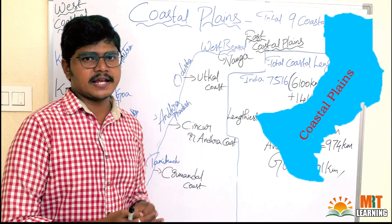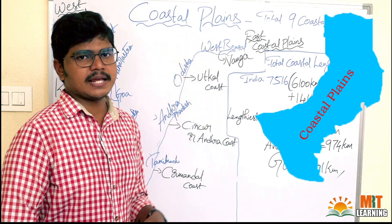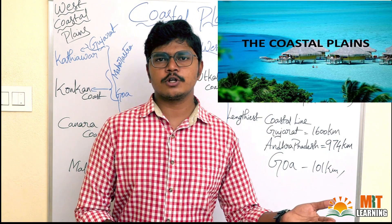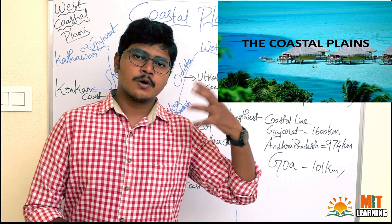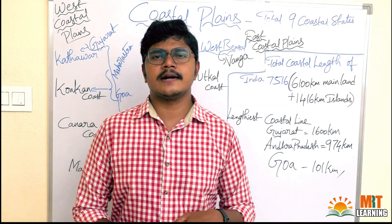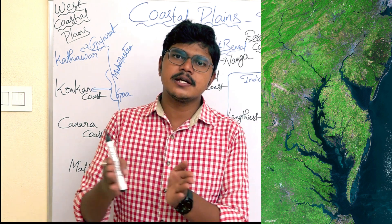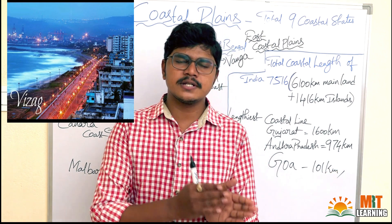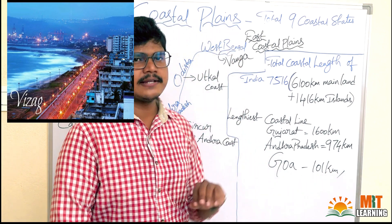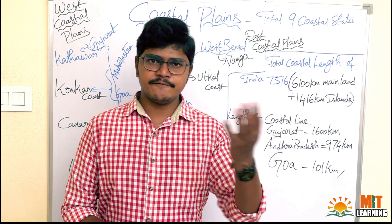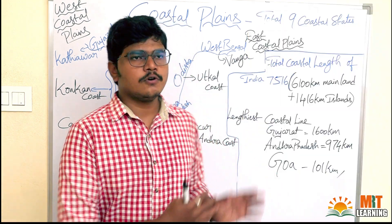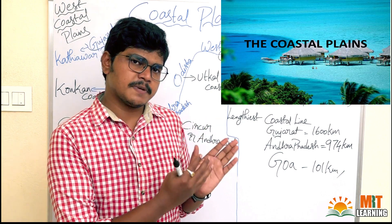If you observe the word 'coastal plains', we have two words: coastal and plains. Coastal means the areas or places which are near to the seas or water bodies. For example, Mumbai is a coastal area because it is near to the Arabian Sea, and Vizag is a coastal area because it is near to the Bay of Bengal. Plains means landforms with low-lying areas or flat surfaces.